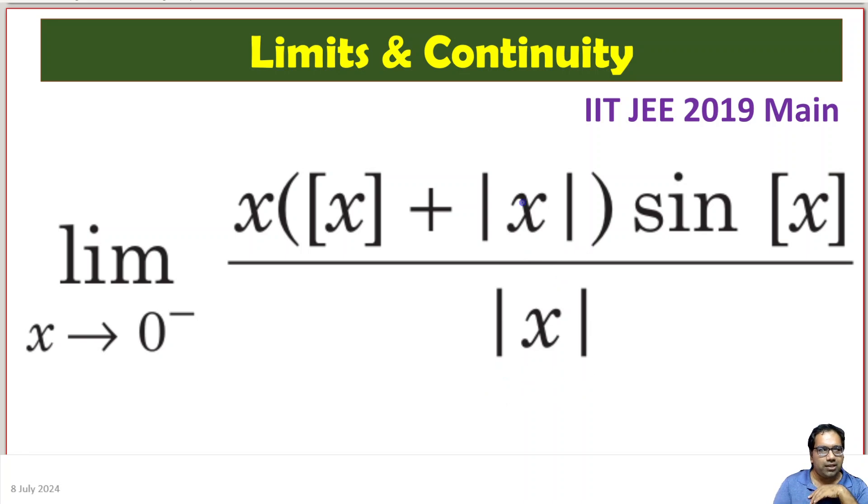For example, absolute value of minus 0.9. This is equal to 0.9, which is nothing but minus of minus 0.9, right? So we know this very basic thing.